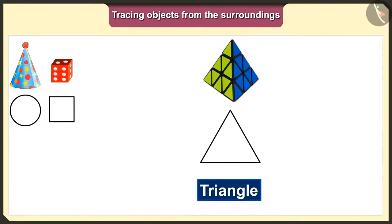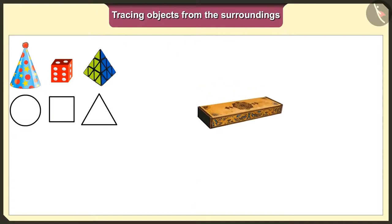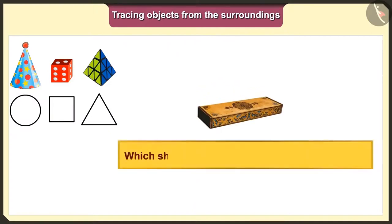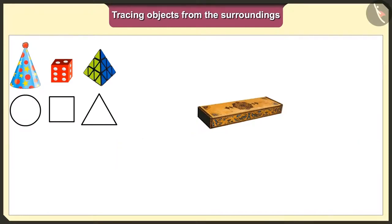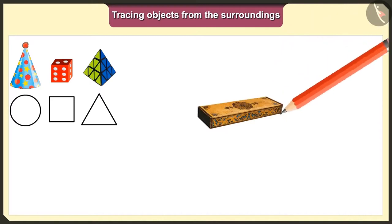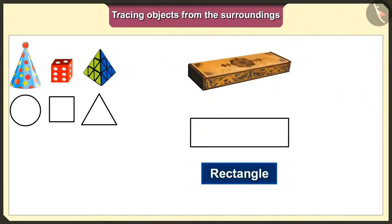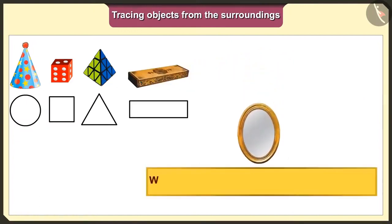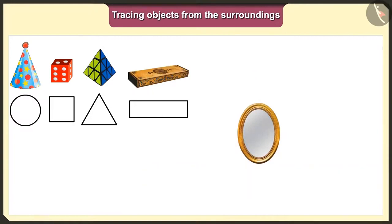Now let's see which shape we would get when we trace this pyramid shaped toy. The base of this toy is a triangle, so we will get a triangle shape when we trace it. Friends, can you guess which shape we would get when we trace this pencil box? Let us trace this pencil box too. The base of the pencil box is a rectangle, so we will get a rectangle shape when we put it on paper and trace it.